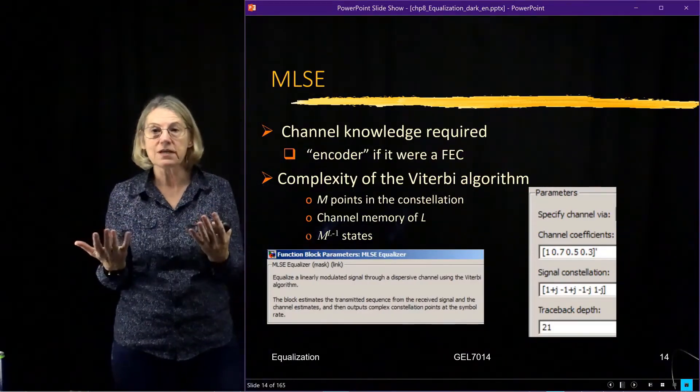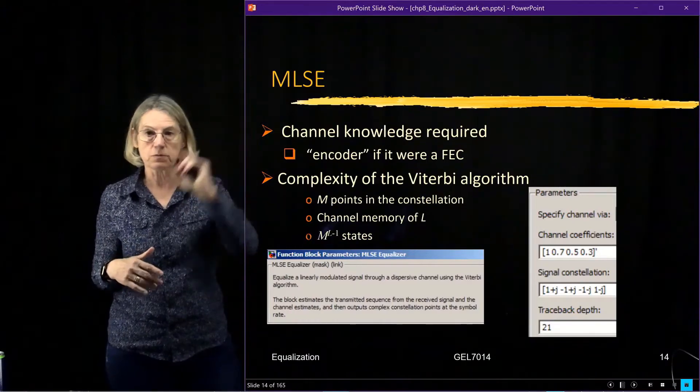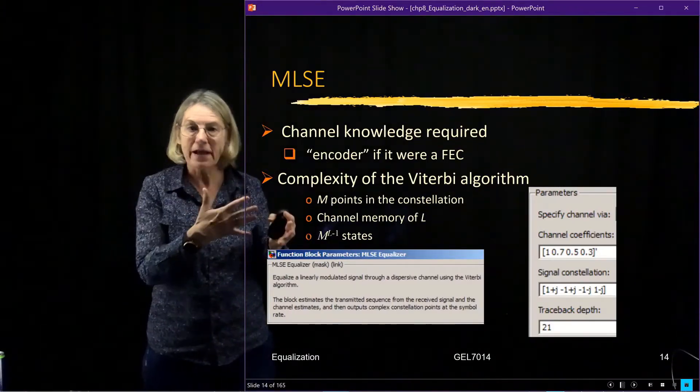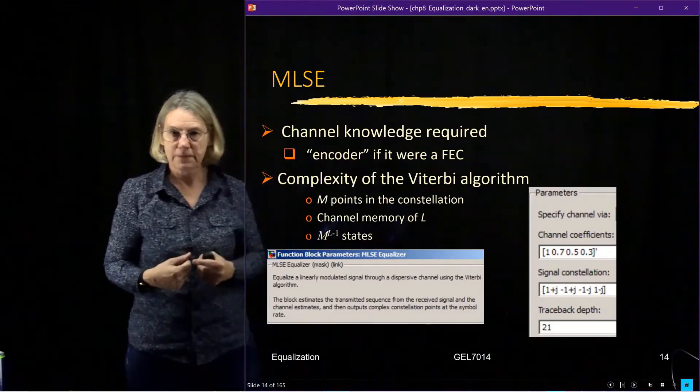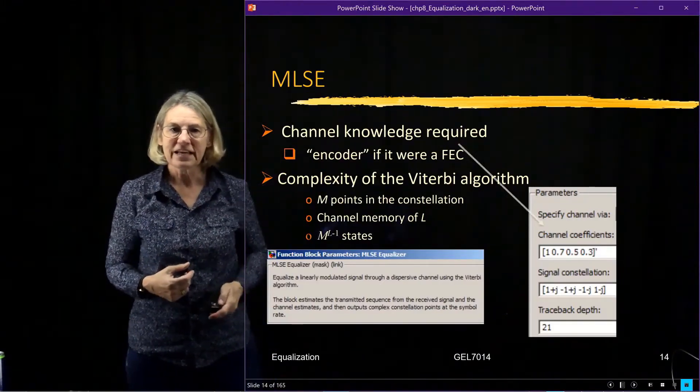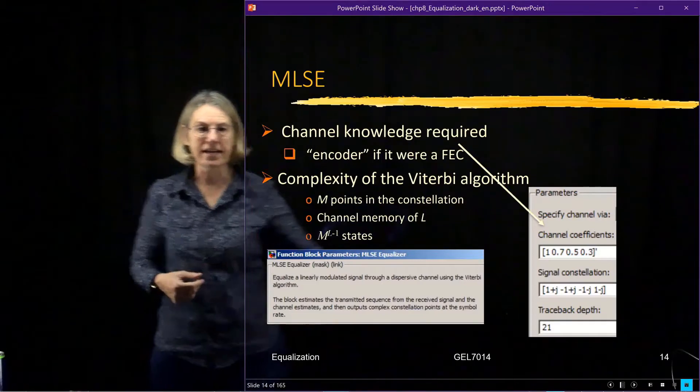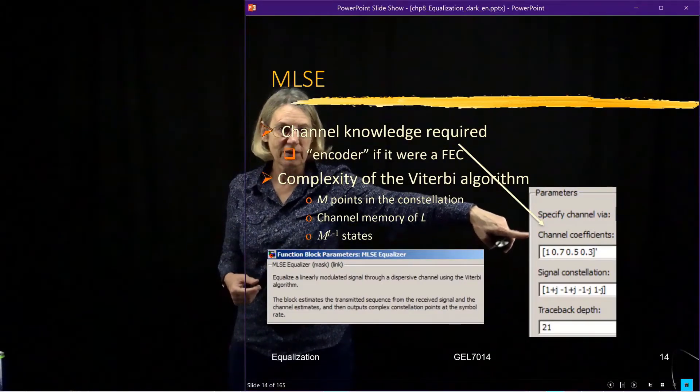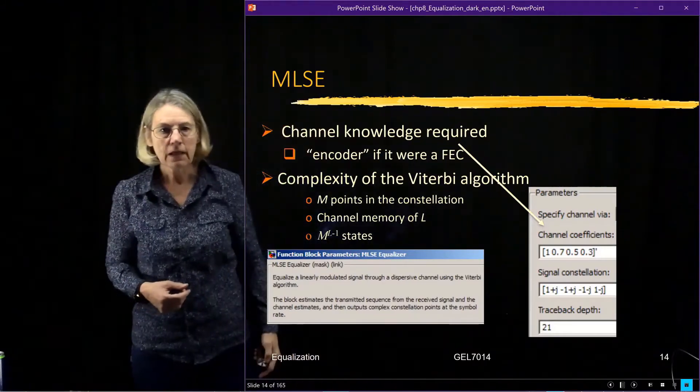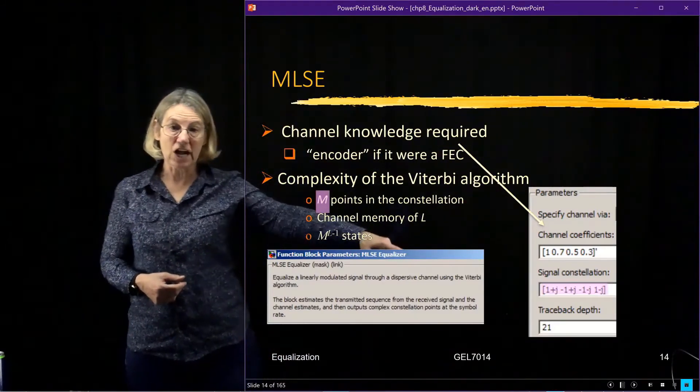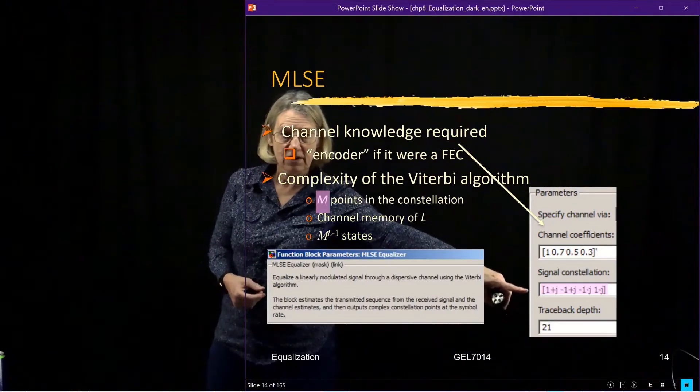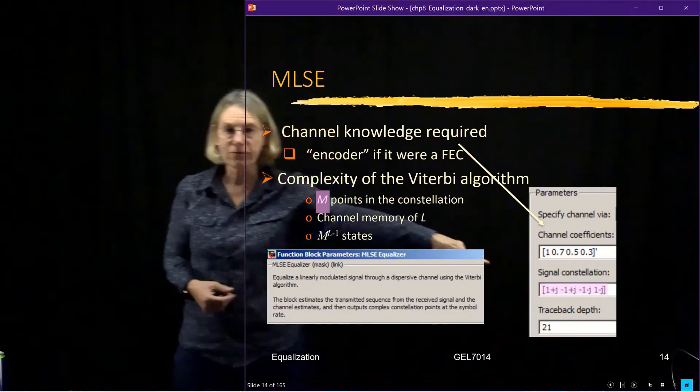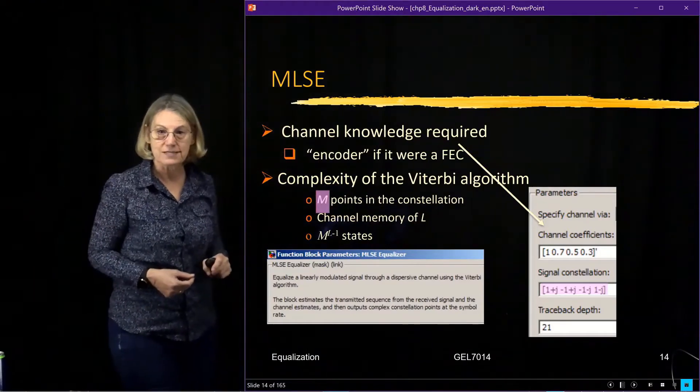So MATLAB has a pre-programmed equalizer known as the maximum likelihood sequence estimator, and it implements a Viterbi algorithm. You have to tell it what the actual channel is. So we enter into MATLAB the channel coefficients. We have to have knowledge of the channel. And if we look closely, we also have to tell it what the constellation is. So here are the constellation points. In this case, there are four points, m equal 4, and those are the coefficients for QPSK.